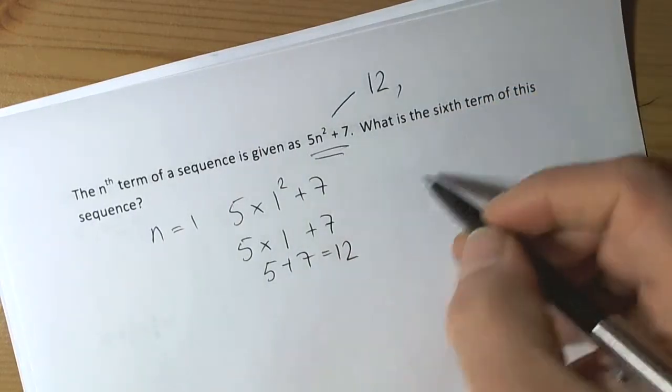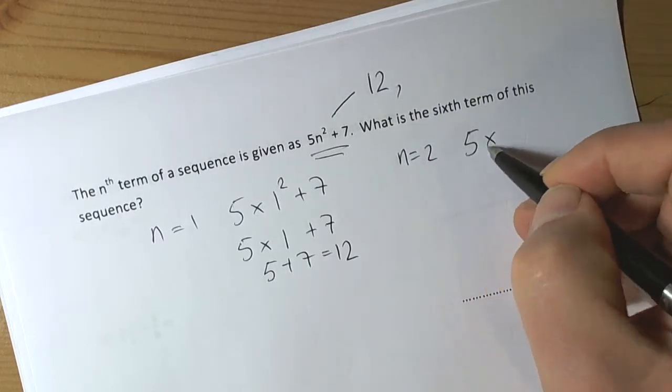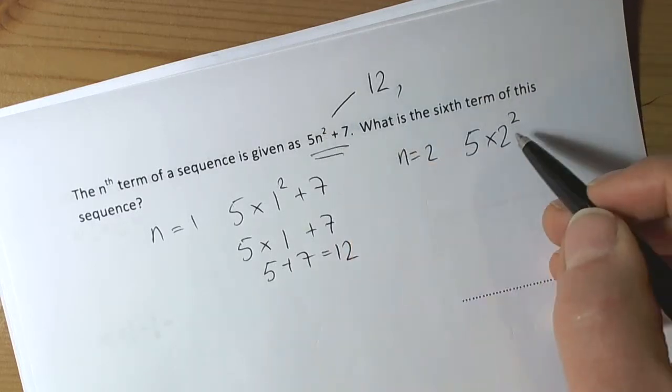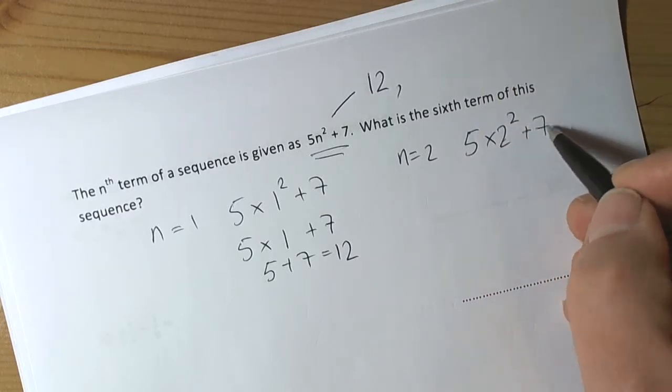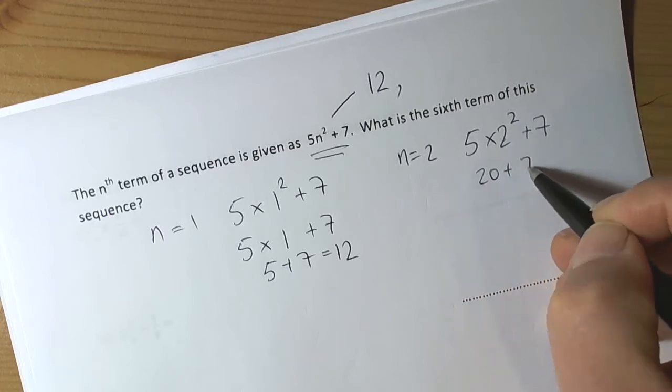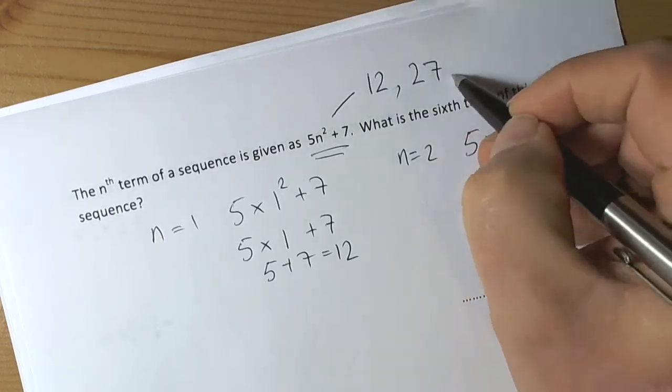And then when n is 2, we're going to be able to get the next term by doing 5 times 2 squared. So we're substituting the n, the term number, by the value of the second term. So 2 squared plus 7, 2 squared is 4, 5 times 4 is 20, so 20 plus 7 is going to be 27. So the next term of the sequence is going to be 27.